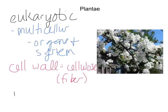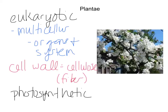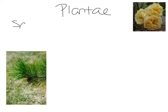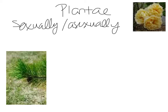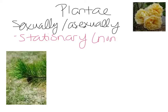Most animals have a mutualistic relationship with organisms inside them that help break down cellulose. Plants are photosynthetic autotrophs — they convert light energy into chemical energy. They reproduce both sexually and asexually. Sexual reproduction involves things like flower parts. Some plants also reproduce asexually by making spores, similar to fungi. Plants are non-motile or stationary — you've never seen a plant or tree walking around.